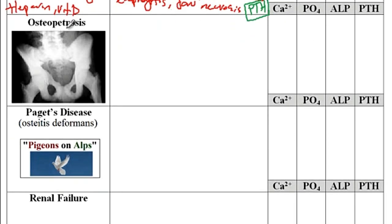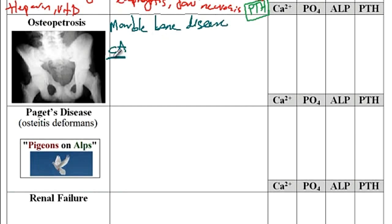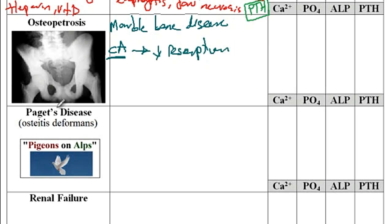The next condition is osteopetrosis, also known as marble bone disease, where there is a defect in carbonic anhydrase, which is required for the production of acid to break down the bones. Since the osteoclast cannot provide an acidic environment, there is difficulty with osteoclast function, resulting in decreased resorption of bones and therefore thick bones. On X-ray, you will see hyperdensity, indicating very thick, dense bones.